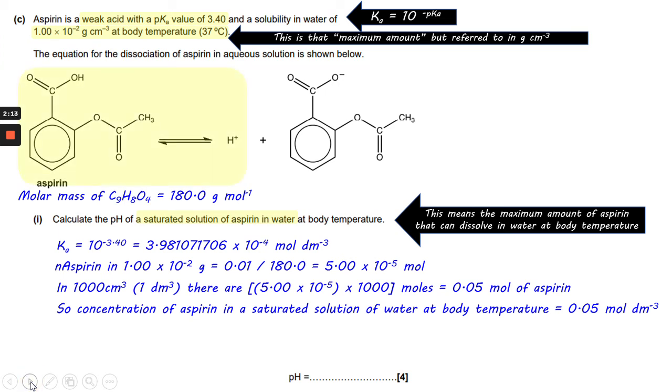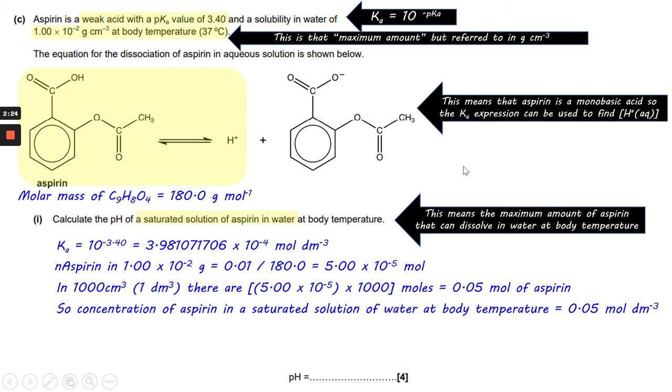So the next thing to do is to look at the molar ratio between aspirin and the acidic hydrogen ion. There's only one, so clearly there's only one carboxylic acid group, so it's this one here that comes off. And this means that aspirin is a monobatic acid, so the Ka expression can be used to find H+.